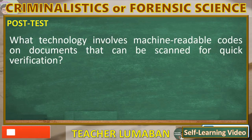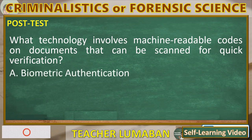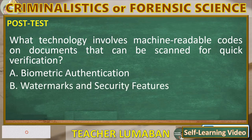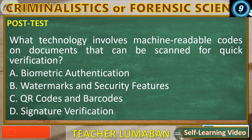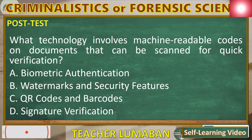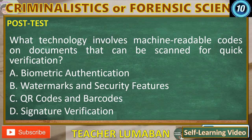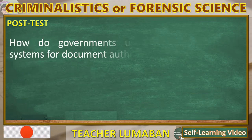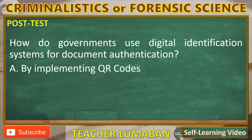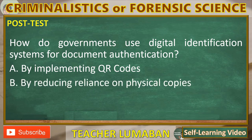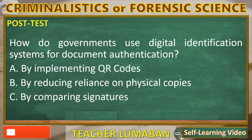What technology involves machine-readable codes on documents that can be scanned for quick verification? A. Biometric authentication. B. Watermarks and Security Features. C. QR Codes and Barcodes. D. Signature Verification. How do governments use digital identification systems for document authentication? A. By implementing QR codes. B. By reducing reliance on physical copies. C. By comparing signatures. D. By using watermarks.